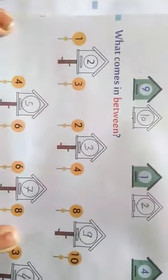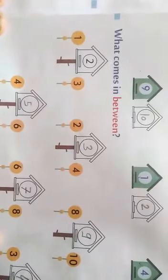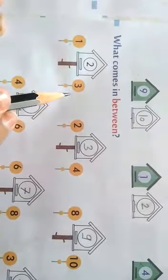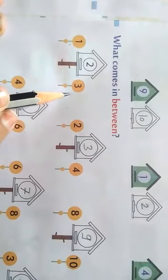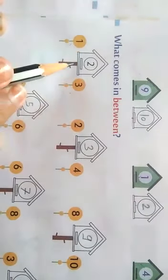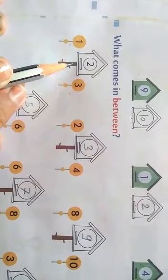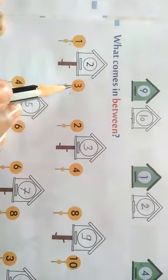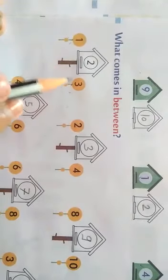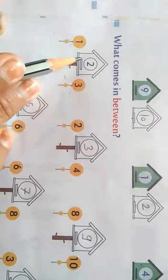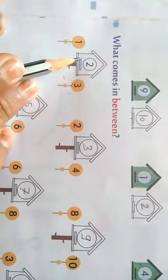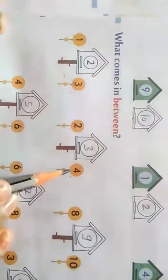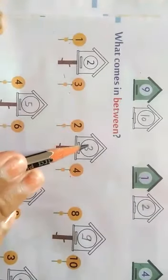Our next question: what comes in between? Between means in the middle. You are given two numbers, and you have to tell which number comes between them. Look at the first part: 1 is given and 3 is given — which number comes in between? 2. Next: 2 and 4 are given — which number comes in between? 3.